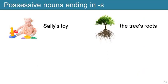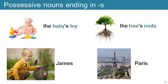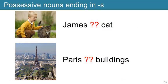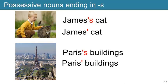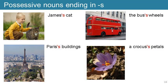Let's take another look at possessive nouns. We have Sally with her toy and the tree with its roots. We add apostrophe-plus-s to the possessive nouns to make 'Sally's toy' and 'the tree's roots'. Now consider James with his cat and Paris with its buildings — both James and Paris end with an 's'. So how do we write them to show possession of the cat and the buildings? In fact, there are two possibilities: add apostrophe-plus-s, or just add an apostrophe. Examples include 'James's cat', 'Paris's buildings', 'the bus's wheels', and 'a crocus's petals'.